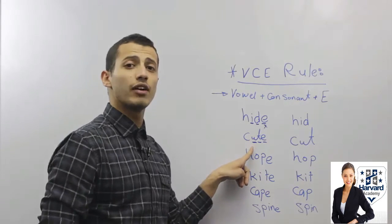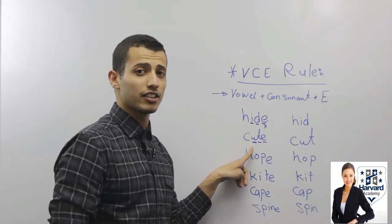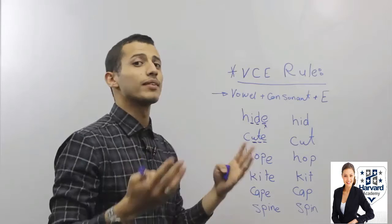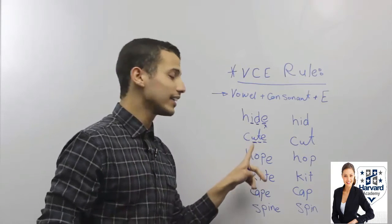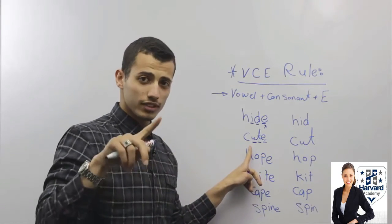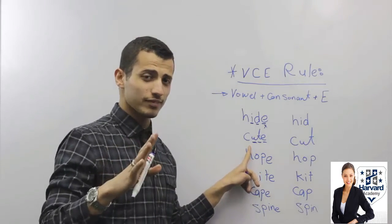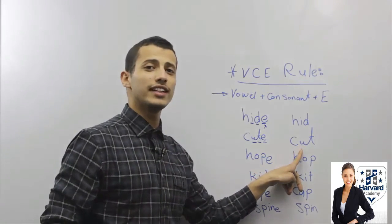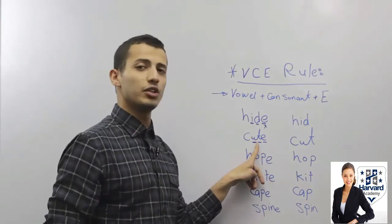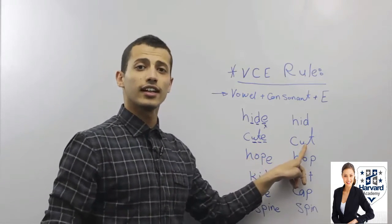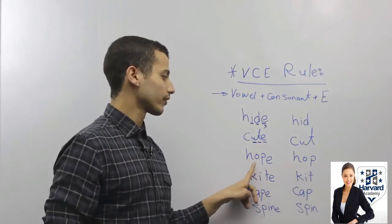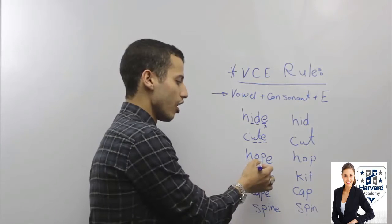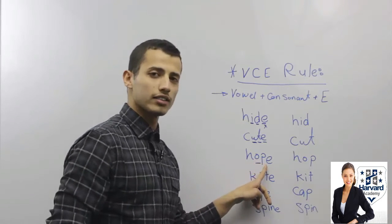So I'm going to pronounce this vowel as a letter in the alphabet, which is 'U.' So I'm going to say 'cute.' And this word without the E is 'cut.' So: cute, cut.